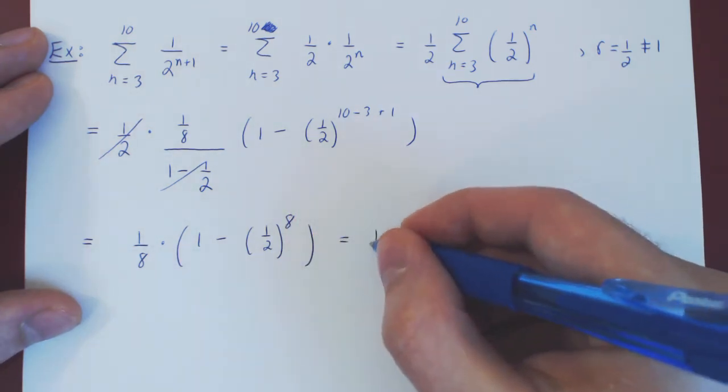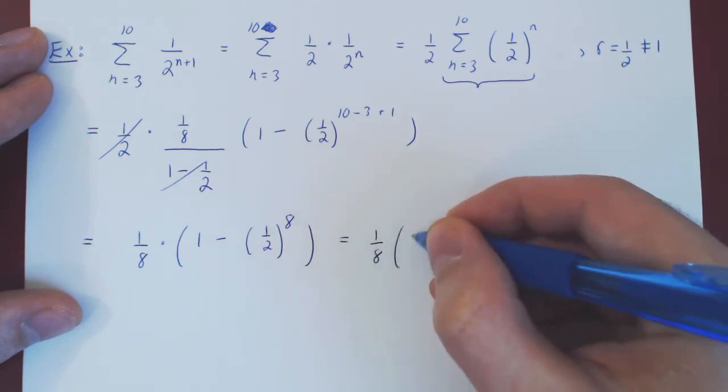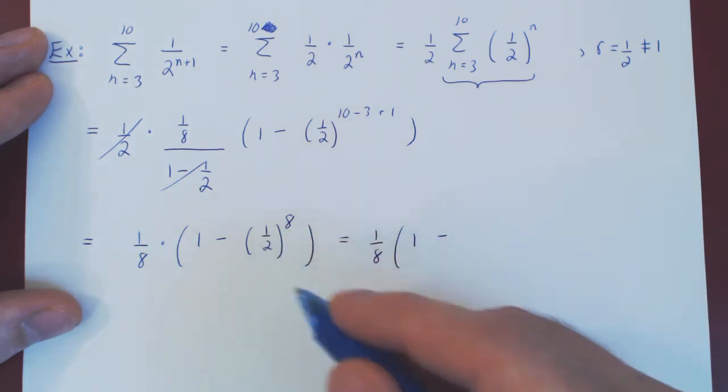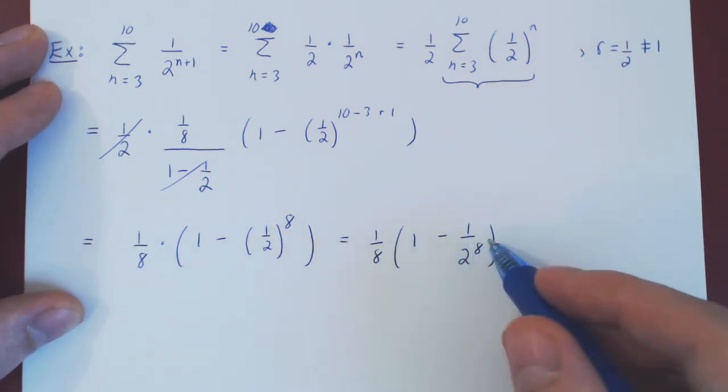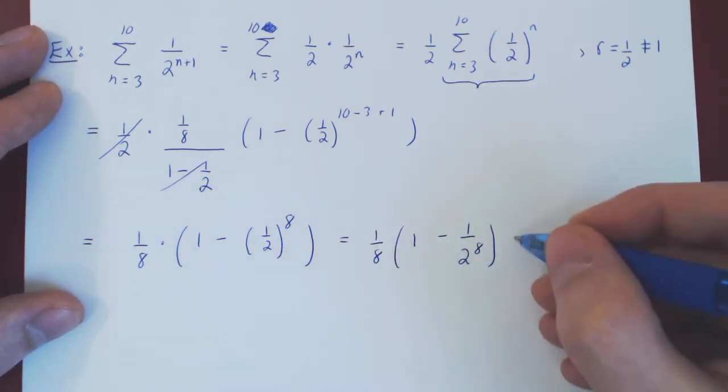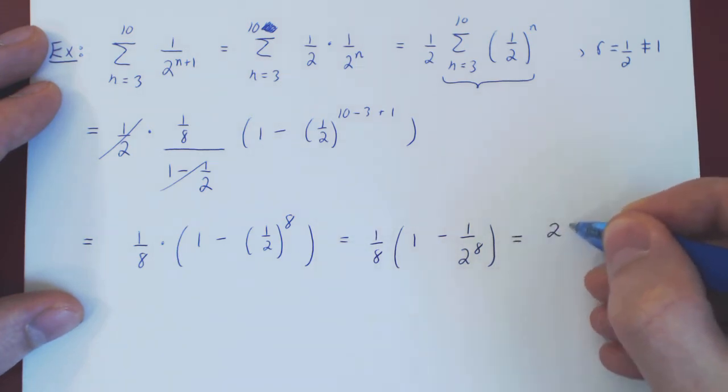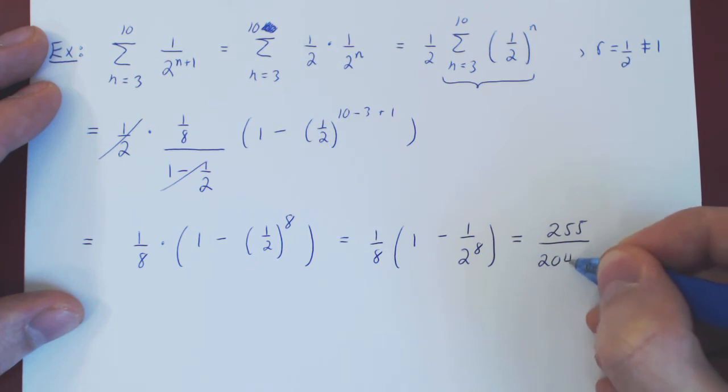So in the end, you have 1 over 8 times 1 minus, 1 to any power is 1, over 2 to the 8. And if you combine this as a single fraction, you will end up with 255 over 2048.